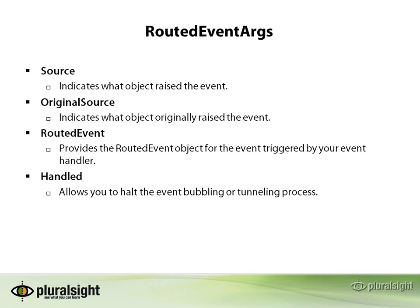All routed events include an instance of the RoutedEventArgs class, or a class that inherits from RoutedEventArgs. This class contains information about the event and its source element. The source property indicates what object raised the event. The original source indicates what object originally raised the event. Usually the original source is the same as the source, but in some cases they could be different — for example, if you click close to the border of a window, you'll get a window object for the source but a border object for the original source.